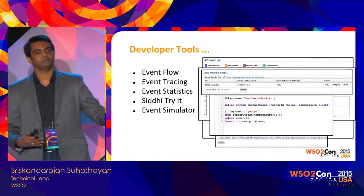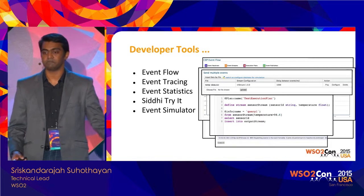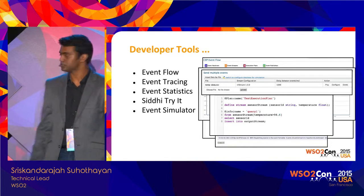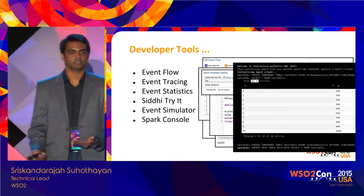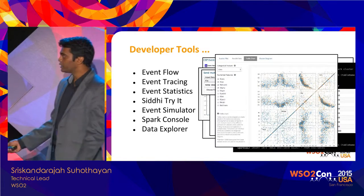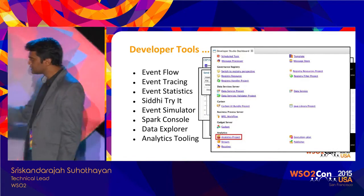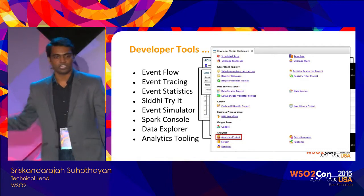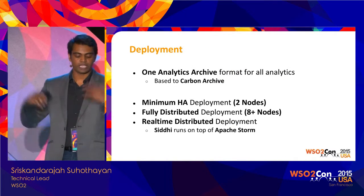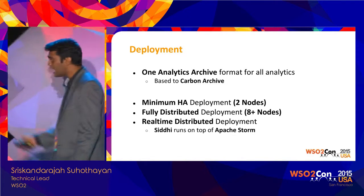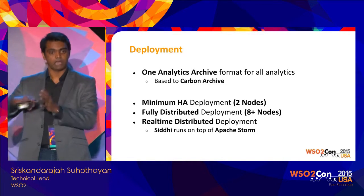We have simulation support — you can upload a file with events to publish, or point to a database and play back events to test and simulate scenarios. There's also a Spark console for interactively running Spark queries and doing batch processing, plus a data explorer to understand what data you have. Tooling support is currently available for real-time capabilities and is being improved after the current release. With tooling support you can build a complete analytics archive with real-time and batch analytics, dashboards, receivers, publishers, and alerting capabilities all in a single deployable archive.